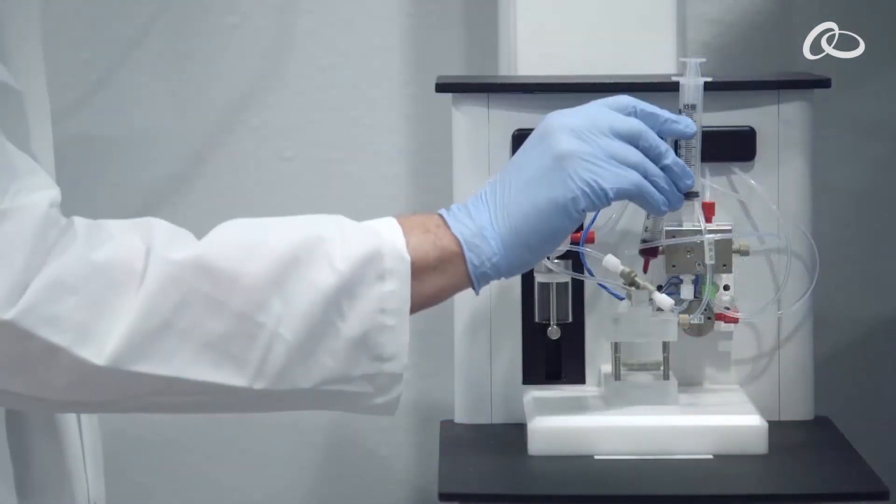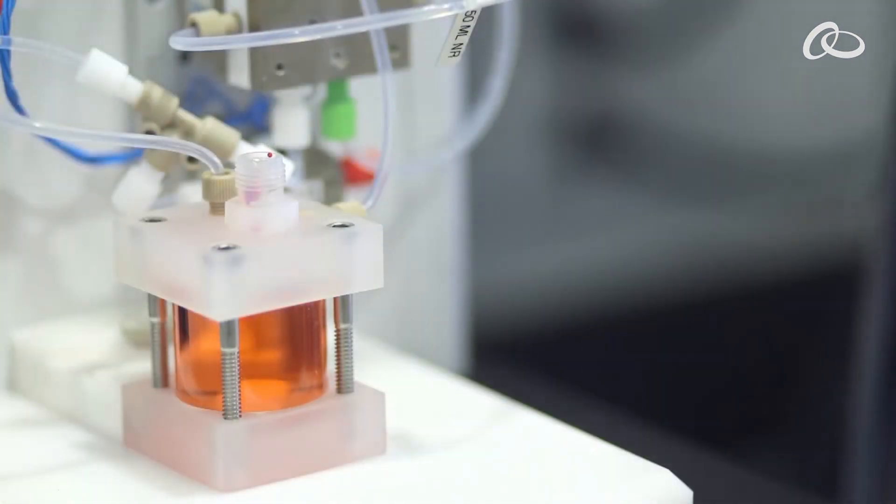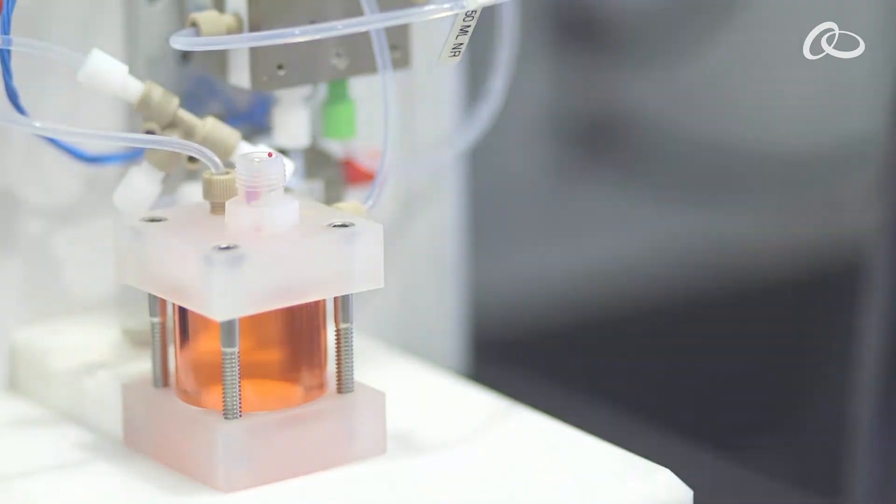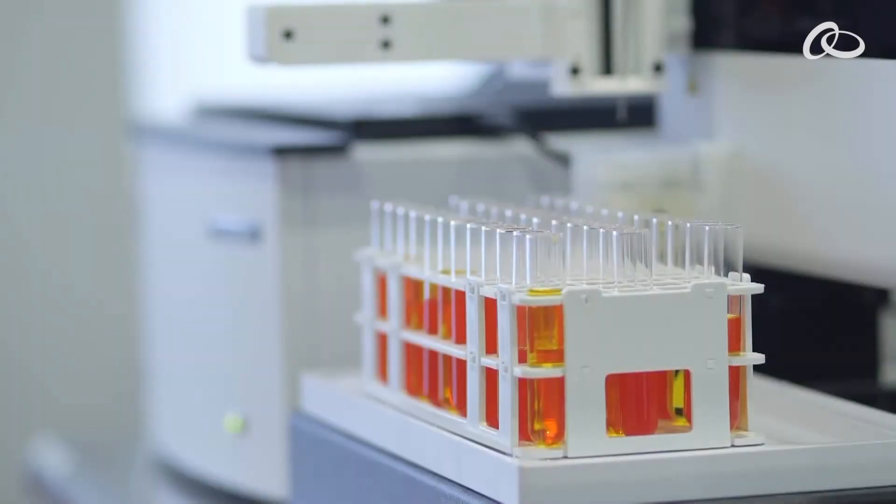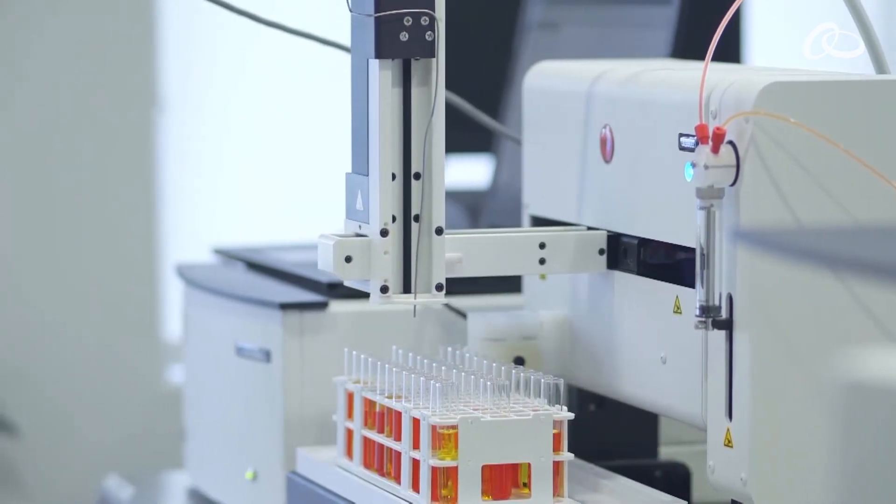The AccuSizer APS uses two-stage dilution for highly concentrated samples, such as high concentration emulsions. All of the AccuSizer systems can be integrated with the auto-sampler for high-throughput particle size analysis.